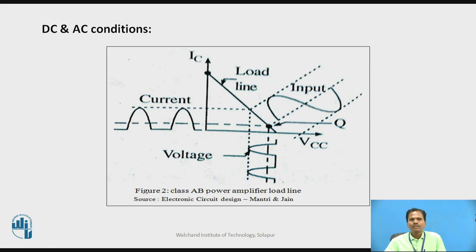This figure shows the DC and AC conditions for Class AB power amplifier. The DC operating point for each transistor used in Class AB power amplifier is selected much closer to the cut-off region. So each transistor conducts for more than half cycle and less than full cycle of input AC signal. The collector current IC and collector-to-emitter voltage varies in response to variation of input base voltage and base current. This figure shows the load line for Class AB power amplifier, showing the variation of output current and output voltage in response to variation of input base voltage and base current when input AC signal is present.